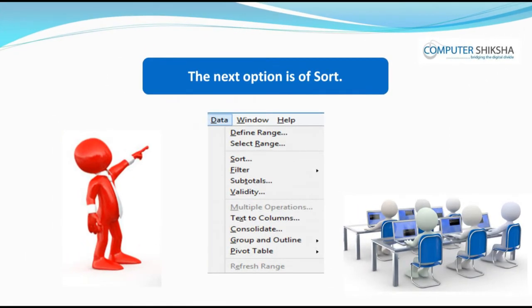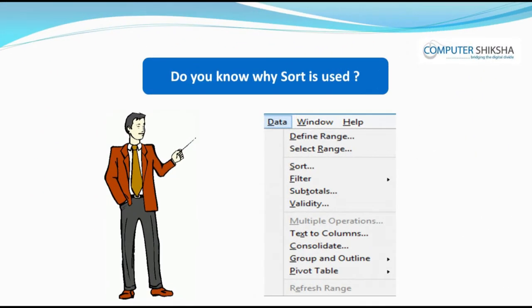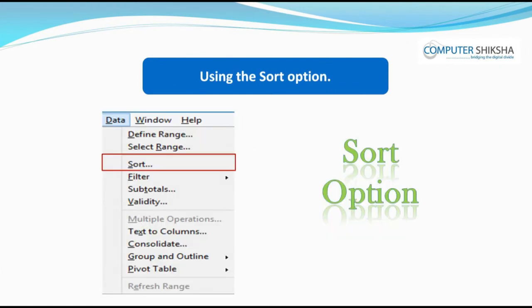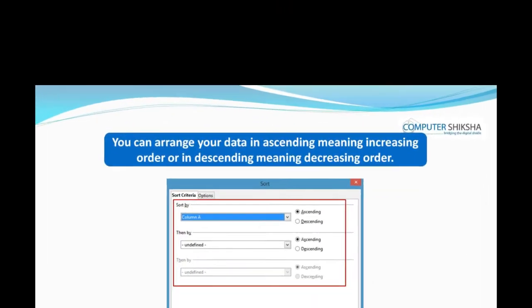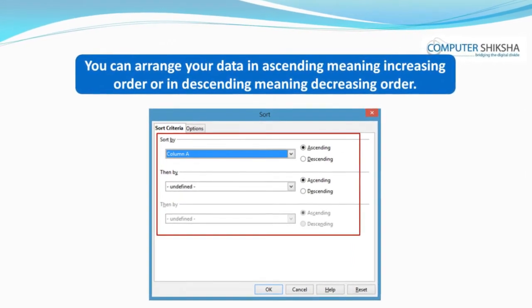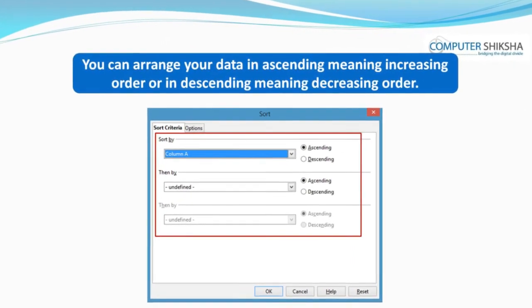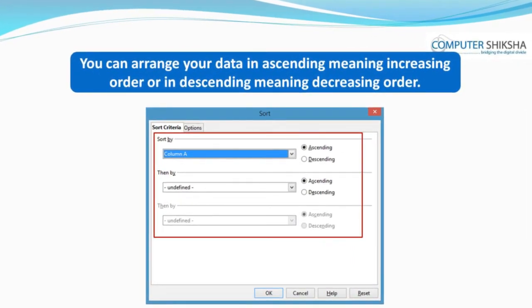The next option is sort. Using the sort option, you can arrange your data in ascending, meaning increasing order, or in descending, meaning decreasing order. You can use sort on the entire data or on a selected part of the data.